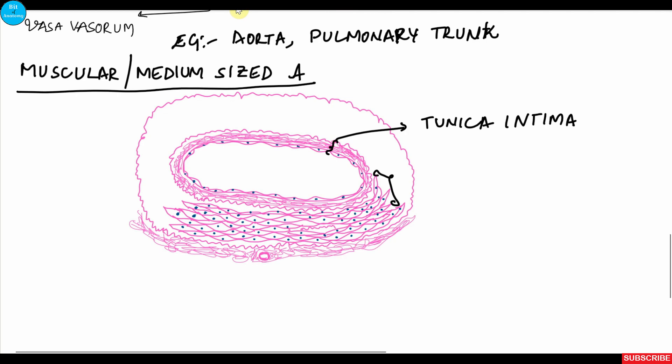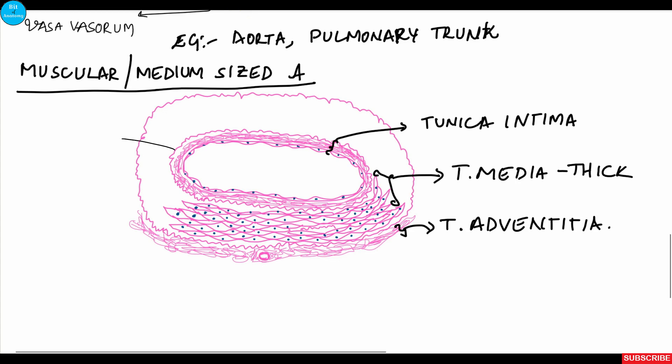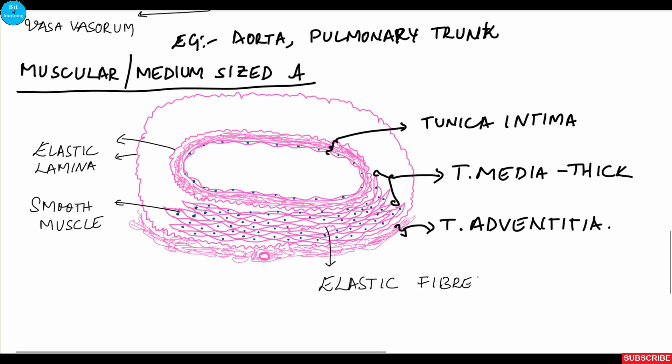The external elastic lamina is also quite prominent, and there is regular tunica adventitia with connective tissue and vasa vasorum. The tunica media is the thickest layer. The smooth muscles regulate the amount of blood flow to particular regions; for example, when walking, muscles in the arteries of the lower limbs relax, dilating the artery to allow more blood flow to skeletal muscle.